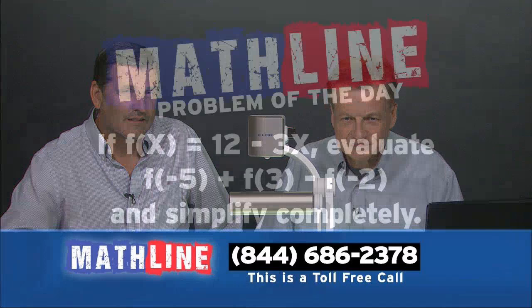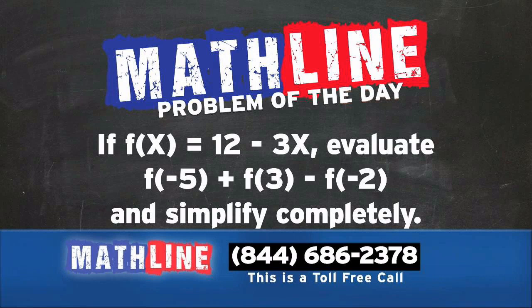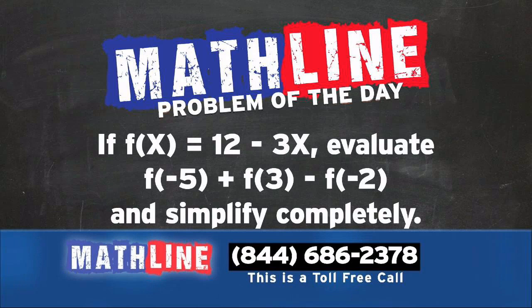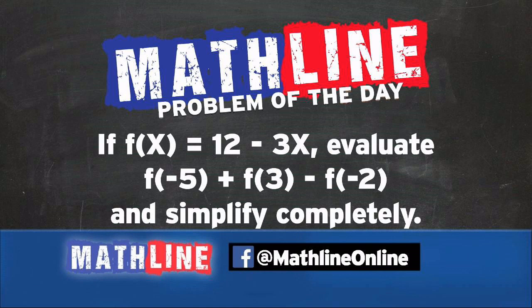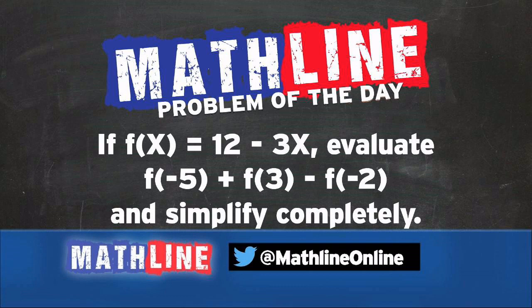Problem of the day. This one's kind of wacko looking, Gary. A lot of times people think, is that f times x? No — it's a notation. It says a function of x, or f of x as we like to call it, equals 12 minus 3x. We're going to evaluate three versions of that function: f of negative 5, plus f of 3, minus f of negative 2, and then completely simplify down to one final answer.